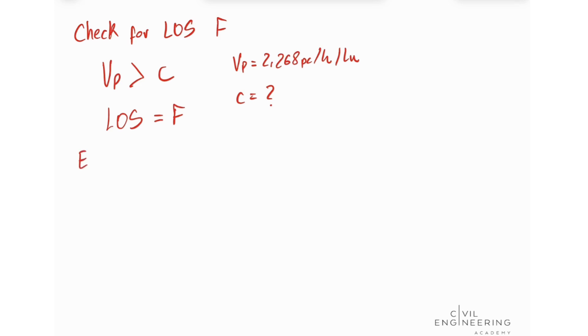So to find our capacity, we're going to be looking at equation 12-7. That says that our capacity is equal to 1,900 plus 20 times our free-flow speed minus 45. So let's input these values. Our free-flow speed is 50 minus 45. Our capacity is going to be equal to 2,000 passenger cars per hour per lane.